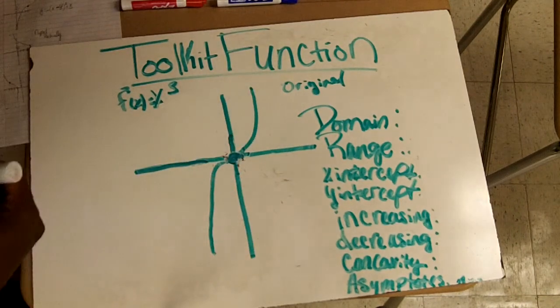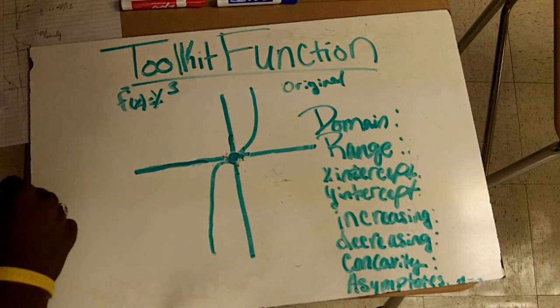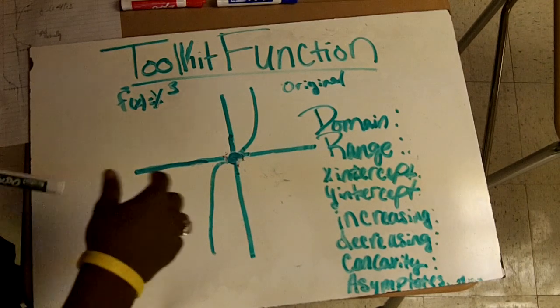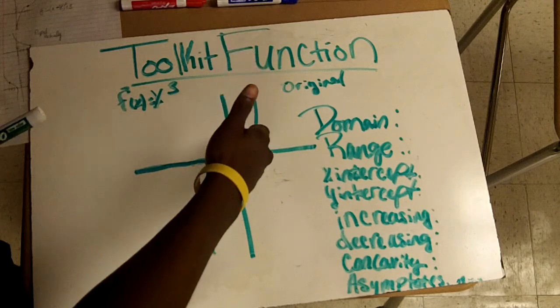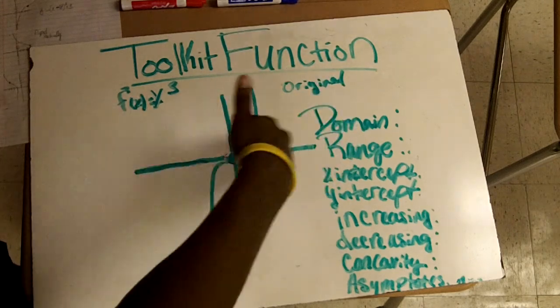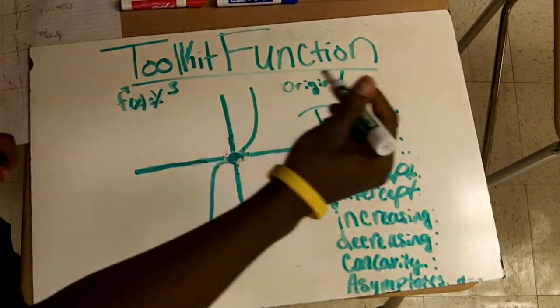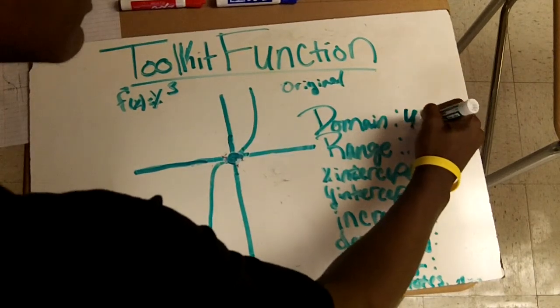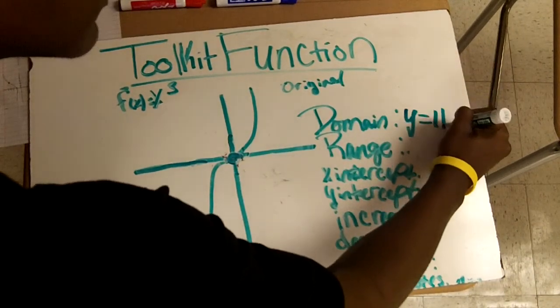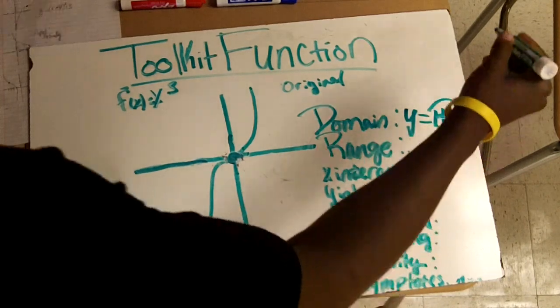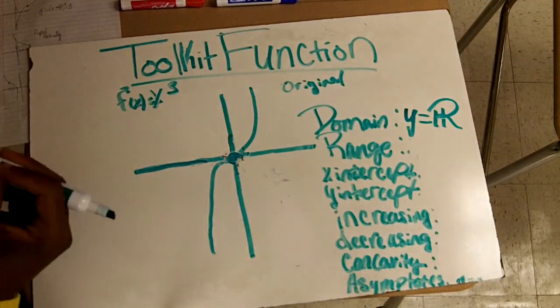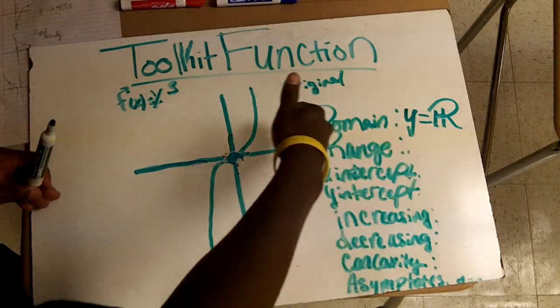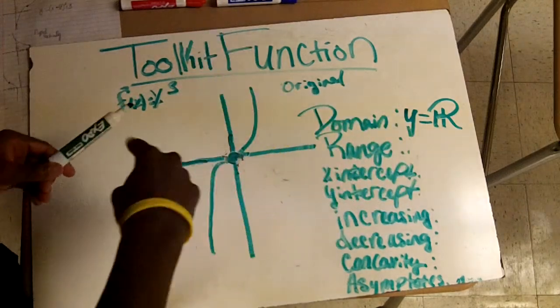First you want to identify your domain, and your domain is the x, which is the x-axis right here. So domain would be x equals all real numbers. Then for your range, which is the y-axis, that will be again all real numbers.